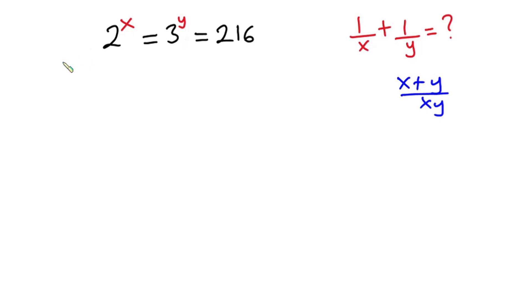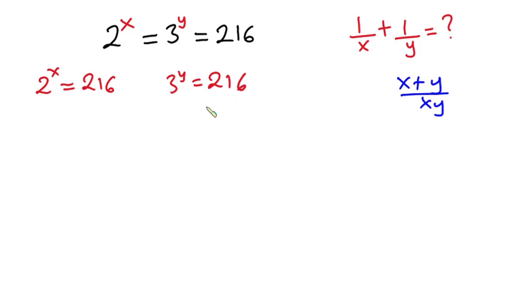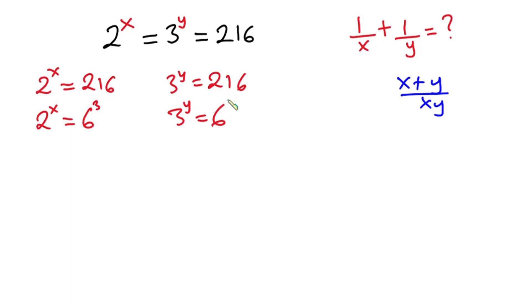From this equation we have 2 to the power x is equal to 6 to the power 3, and 3 to the power y is also equal to 6 to the power 3.